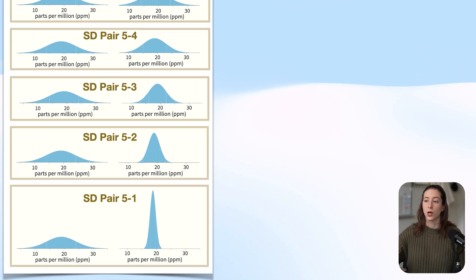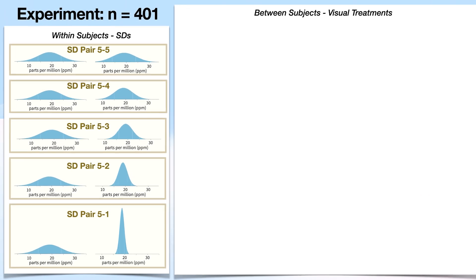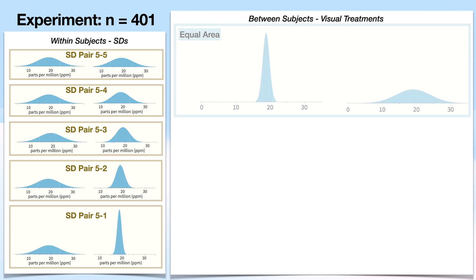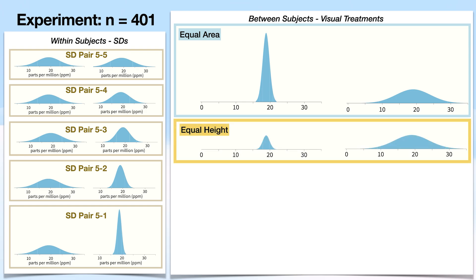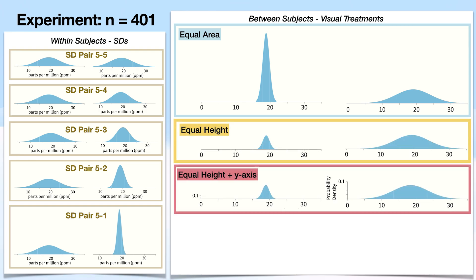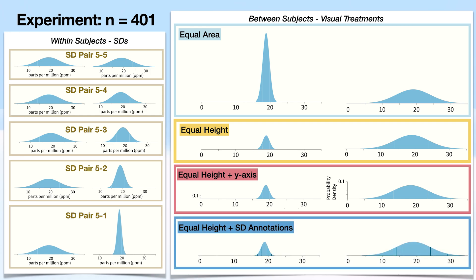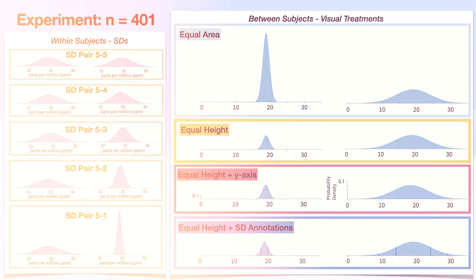We had our participants going through and answering that same question that we just walked through together, but about these PDFs. Also, we ran some between subjects visual treatments conditions. So one group of subjects saw all these PDFs scaled so that they would take up an equal number of pixels. Another saw all these PDFs scaled so that they would take up the same height. The third saw all of these PDFs so that they would take up the same height, but then also with a y-axis that scaled proportionally to that scaled down height. And our last group saw all the PDFs scaled down to the same height with little lines annotating where the standard deviations were.